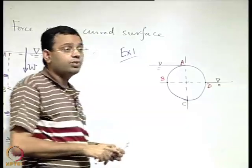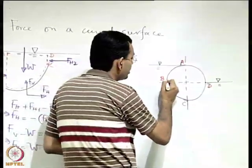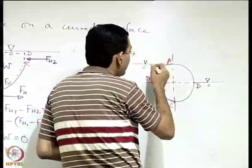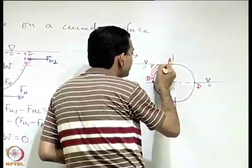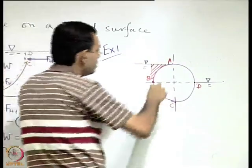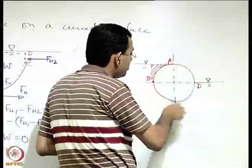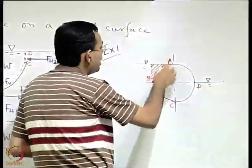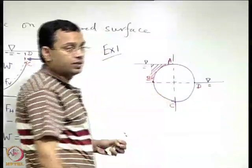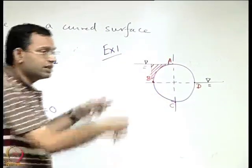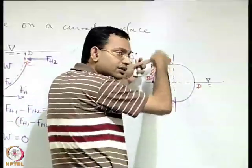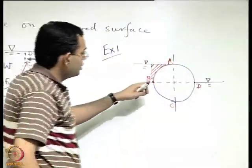For the vertical component, we project from the ends of the surface up to the free surface and use the weight of the fluid contained within that volume. For part AB, this volume is projected upward, and the vertical component is directed downward. For part BC, we project from C up to the free surface.